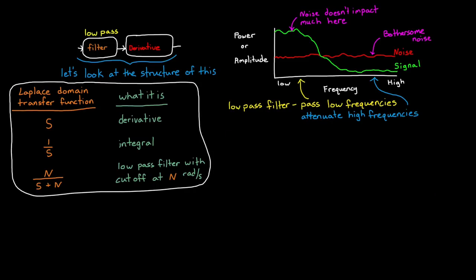Also n over s plus n isn't the only popular form of the first order low pass filter. We can divide the top and bottom by n to get 1 divided by 1 over n times s plus 1.